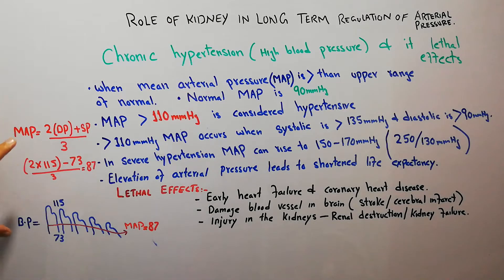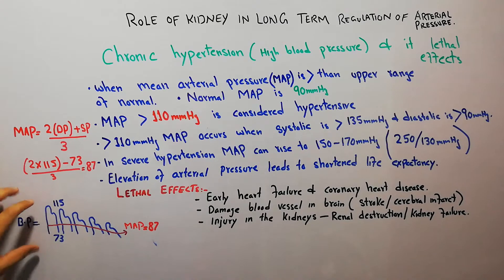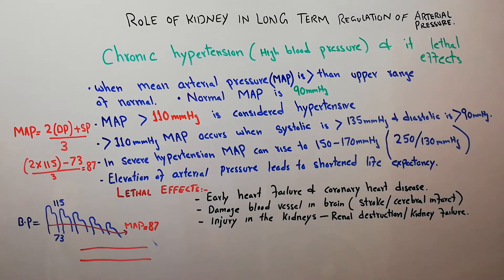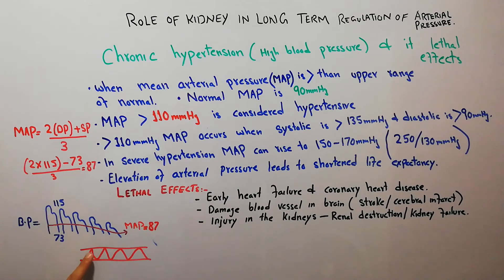Mean arterial pressure is basically an average blood pressure. Blood pressure is the pressure applied by the blood on the blood vessels — for example, on the walls of an artery. The pressure applied by blood on these walls is known as BP, or blood pressure.